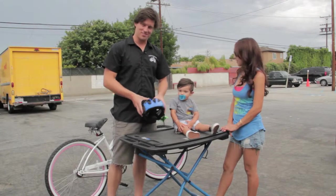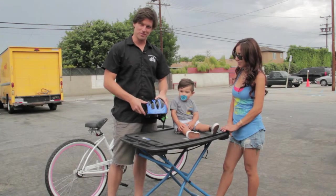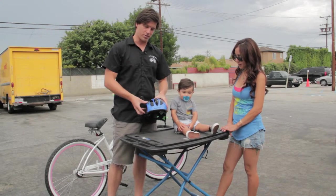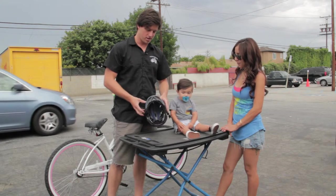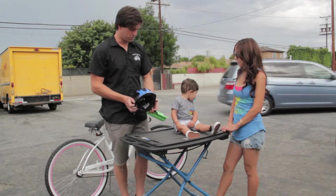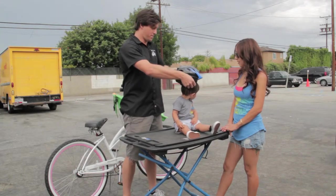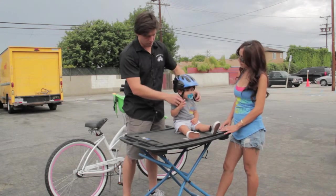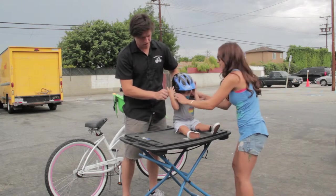This is Theodore. And this is Theodore's helmet. It's a Giro Scamp. It's the smallest helmet we carry. It's 46 to 50 centimeters. And Teddy here is 14 months old. So this is a perfect helmet for him. Anyone under 18 is required by law to wear a helmet.